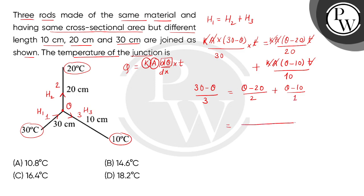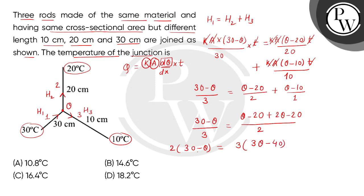Right hand side का LCM लेने पर numerator में आएगा (θ − 20) + 2(θ − 10). Cross-multiplying: 2(30 − θ) = 3(3θ − 40). Distributive law लगाने पर: 60 − 2θ = 9θ − 120. So 60 + 120 = 11θ, giving us 180 = 11θ.